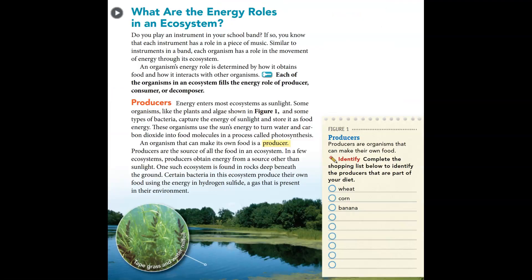What are the energy roles in an ecosystem? Each instrument has a role in a piece of music. Similarly, each organism has a role in the movement of energy through its ecosystem. An organism's energy role is determined by how it obtains food and how it interacts with other organisms. Each organism in an ecosystem fills the energy role of producer, consumer, or decomposer.